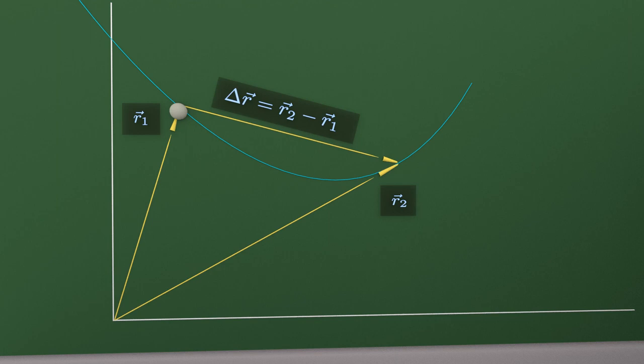Delta r is equal r2 minus r1, as it is shown right here. Remember, displacement is always equal to the final position minus the initial position.